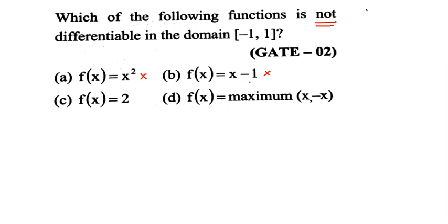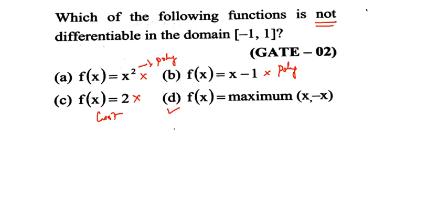The first three options are polynomial and constant functions. A constant function is also continuous and differentiable everywhere. So the first three options are not the answer. The answer should be option D.